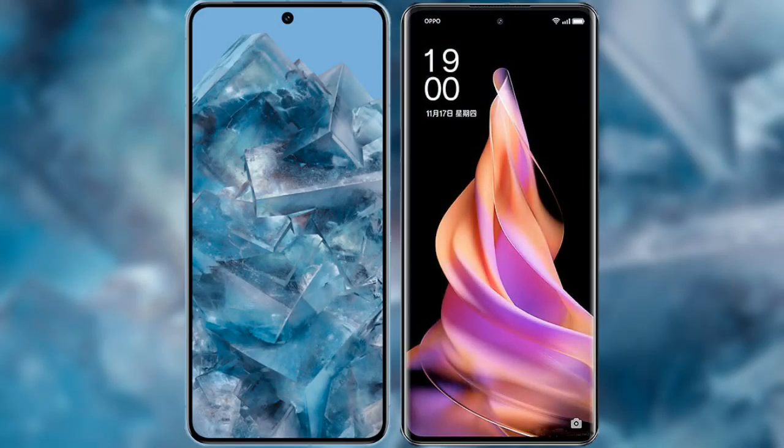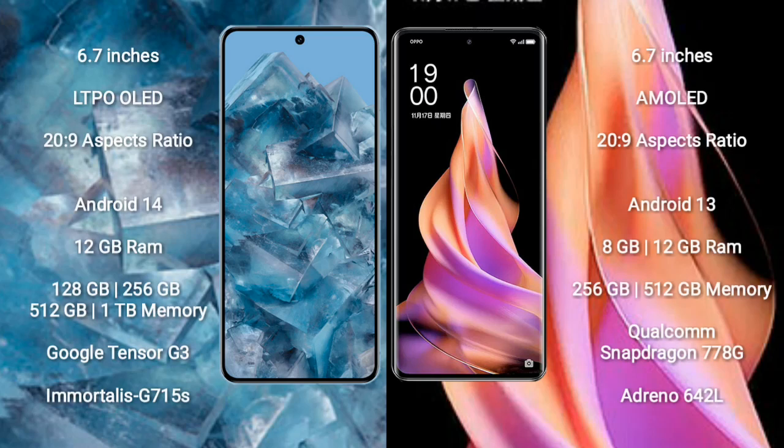I will compare the new Google Pixel 8 Pro with OPPO Reno 9. Google Pixel 8 Pro comes with a 6.7-inch LTPO OLED display and a resolution of 2800x1344. OPPO Reno 9 comes with a 6.7-inch AMOLED display and a similar resolution.